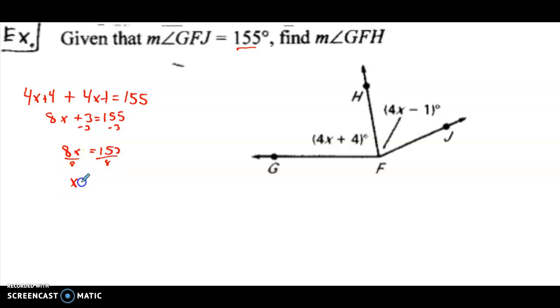Okay, that's not our answer. Up here, the question says, what is the measure of angle GFH? GFH is the 4x plus 4. So always make sure you're answering the question. Measure of angle GFH equals 4 times our x value, which we just found of 19, plus 4.